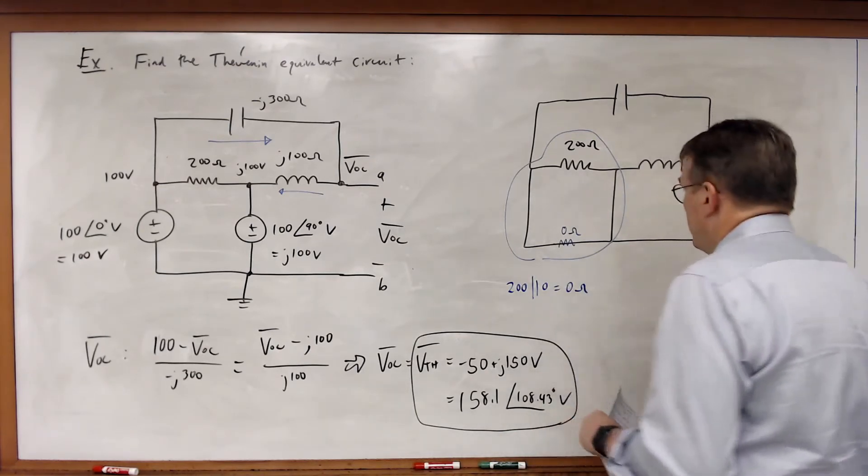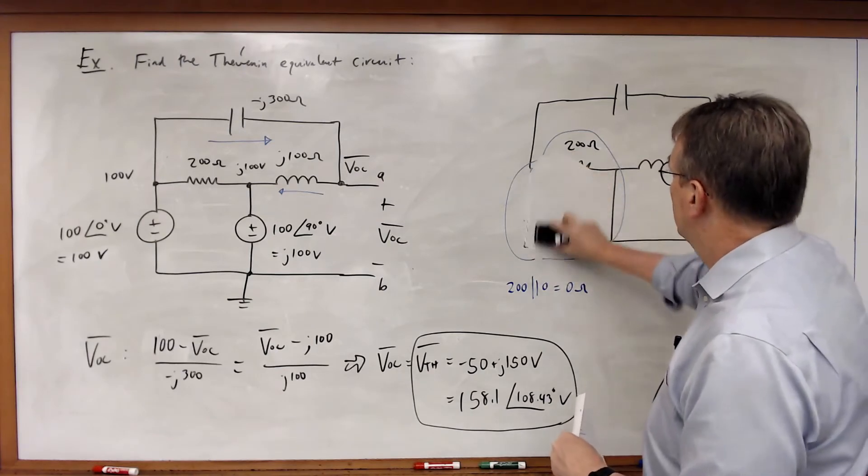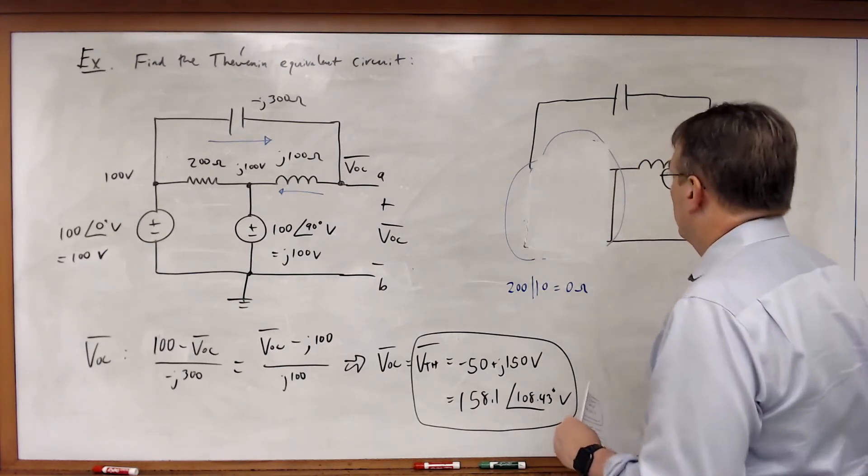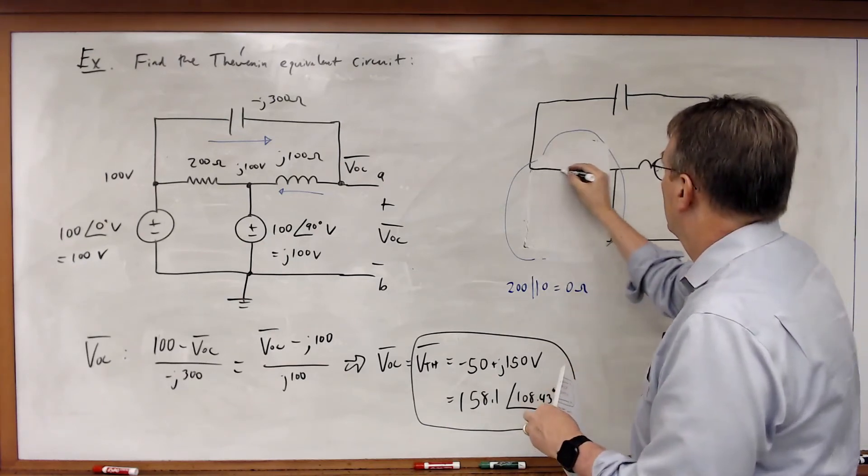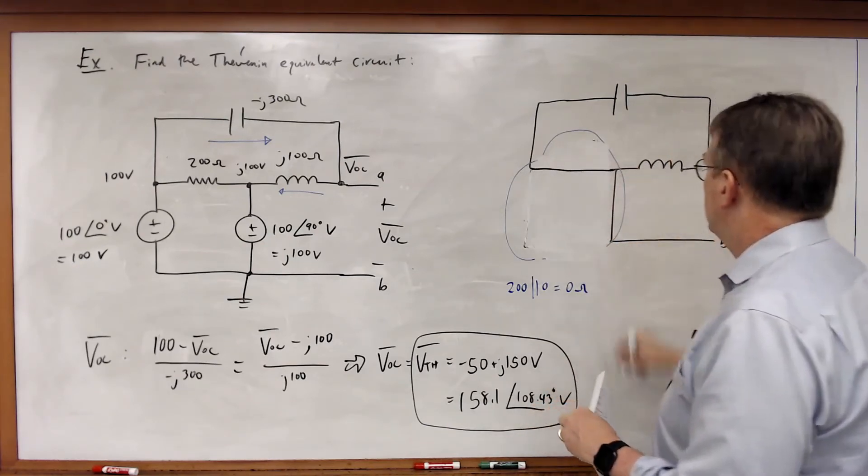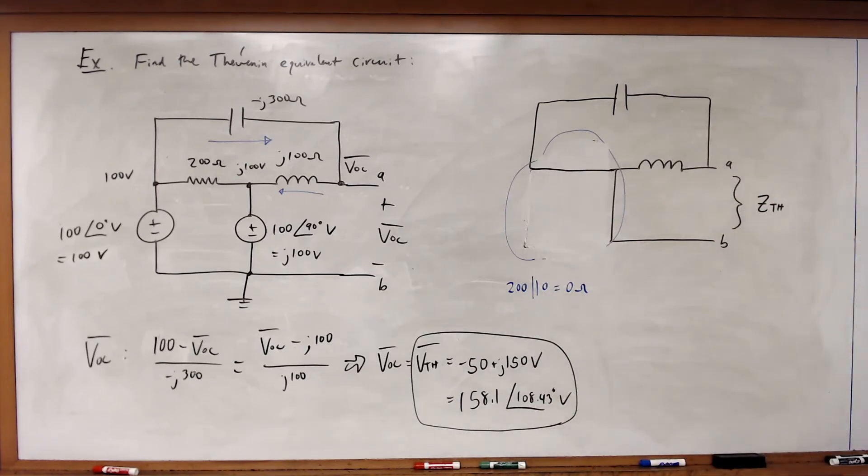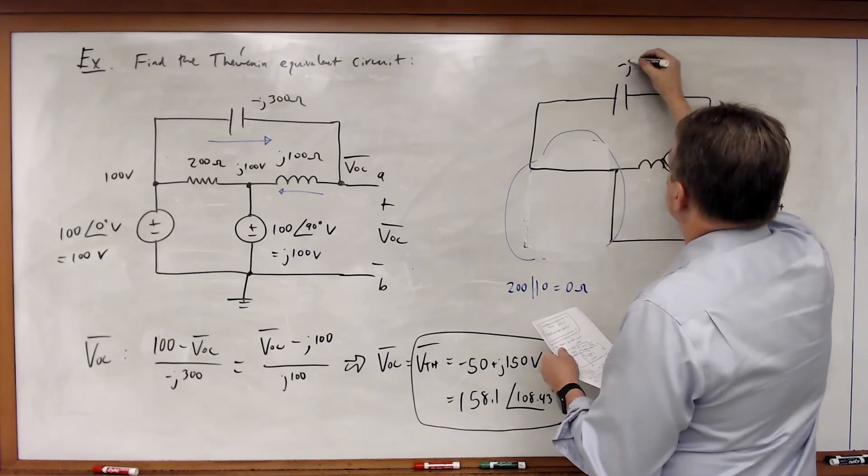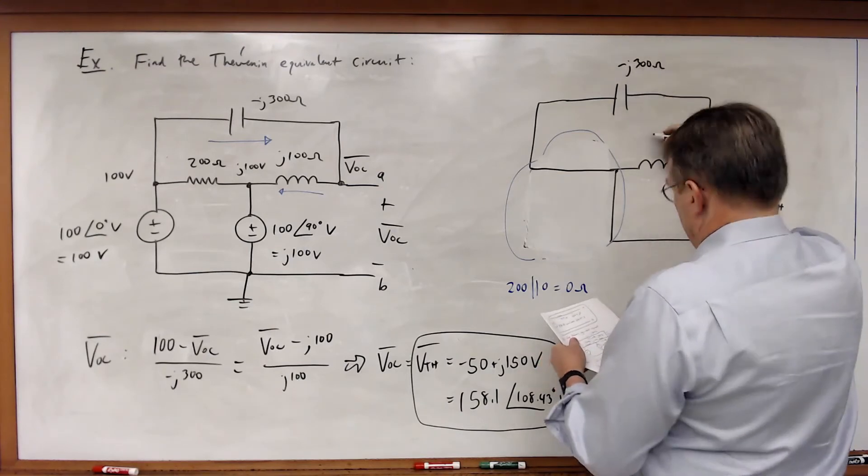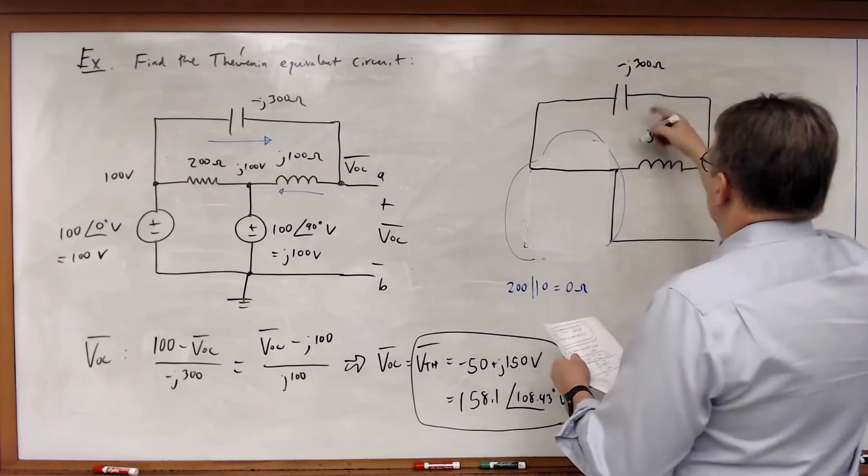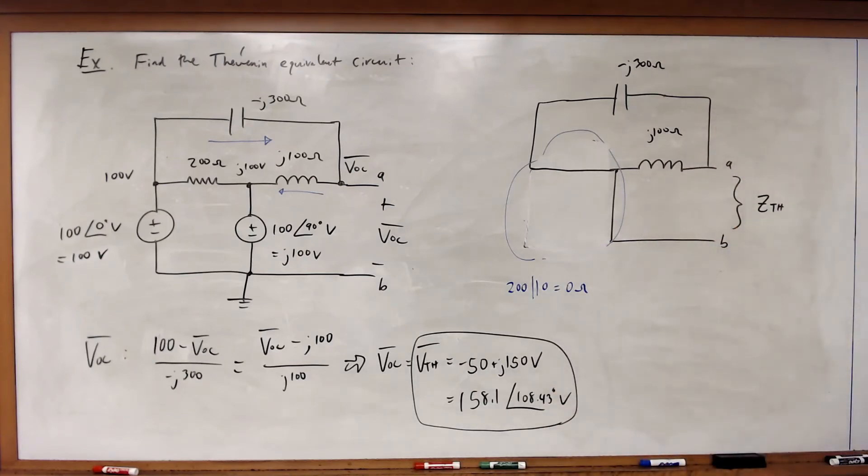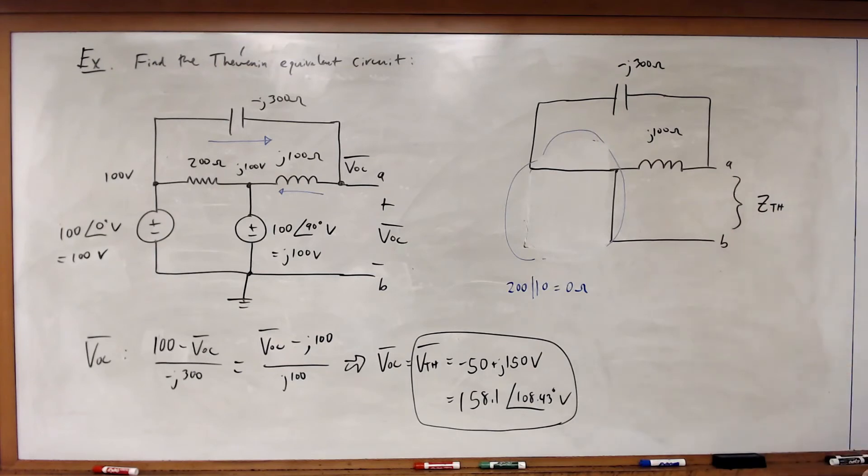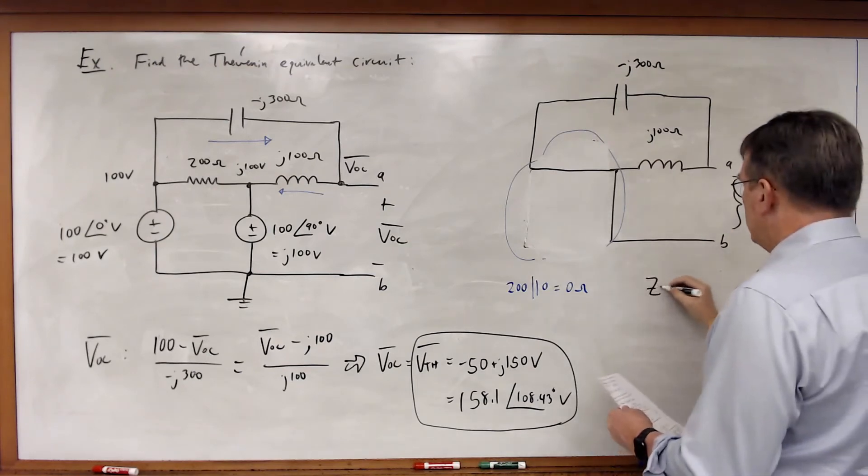If I redraw this, this is just a wire. So that eliminates that. Now what I've got left is a -j300 ohm and a j100 ohm impedance.